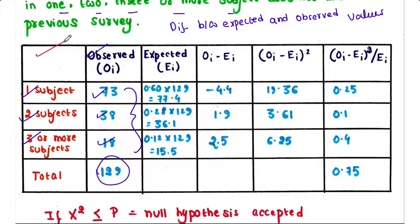We will tabulate our data here. This column contains observed values which we have found. This column contains expected values. According to previous survey, we know that 60% students failed in 1 subject. So 60% of 129 students is 77.4.